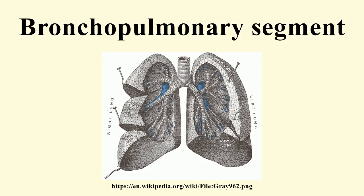Left lung — superior lobe: apical segment, posterior segment, anterior segment. Basal segments: posterior basal segment, lateral basal segment.